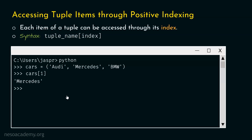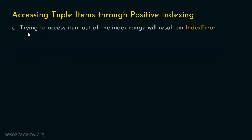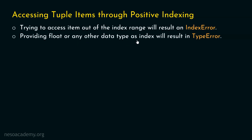There are some more important points. The first point is: trying to access an item out of the index range will result in an IndexError. If we try to access an item which does not exist — which is out of the index range — we will get an IndexError from Python. Also, providing a float or any other data type as an index will result in a TypeError. We will receive a TypeError when we try to provide any data type other than integer within square brackets.